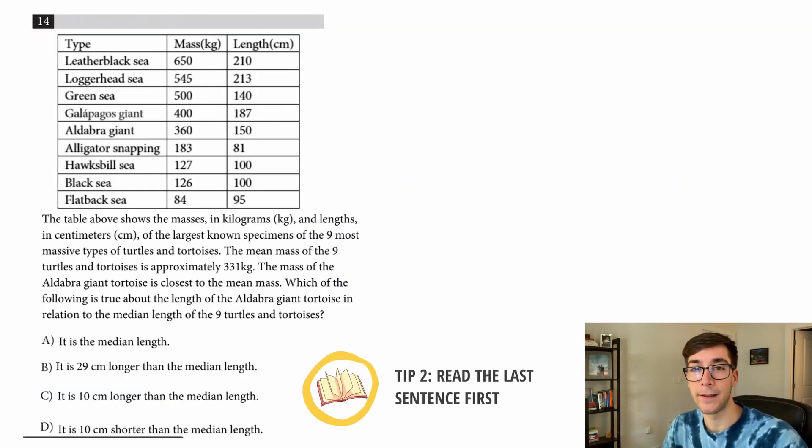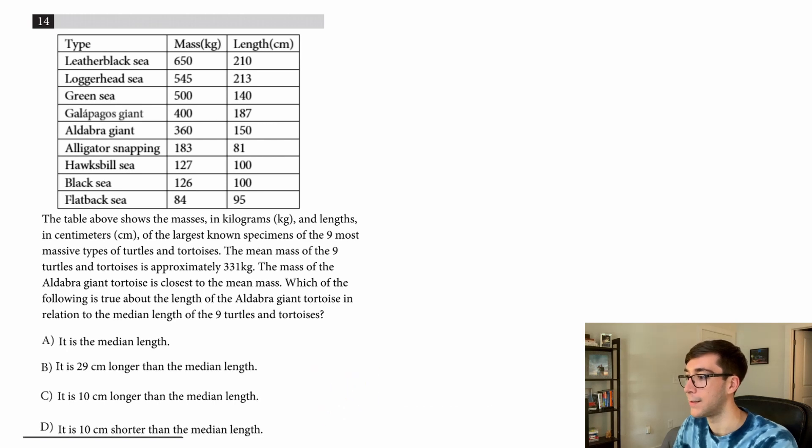Tip two is to read the last sentence first. This problem has a giant chart and a big block of text, but I'm just going to read the last sentence. Which of the following is true about the length of the Aldabra giant tortoise in relation to the median length of the nine turtles and tortoises? So we know we're talking about the Aldabra giant tortoise, median length, and the other turtles.